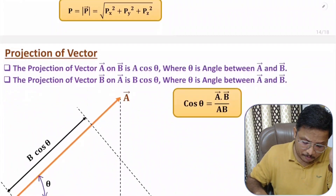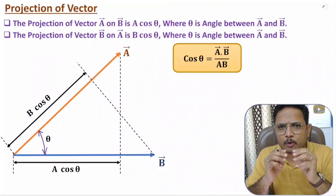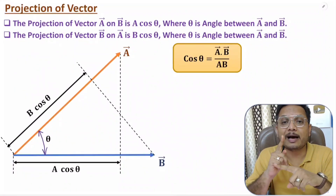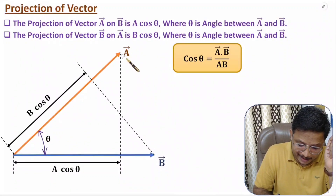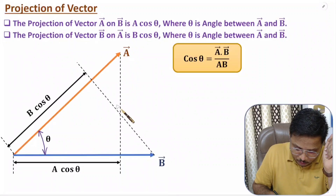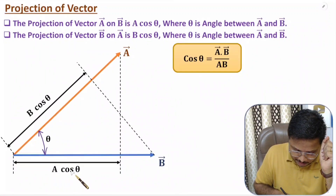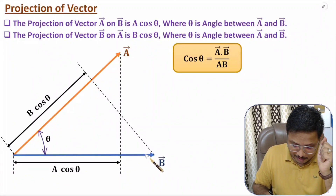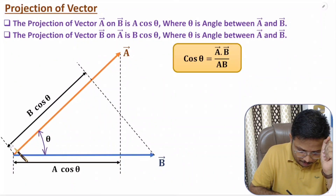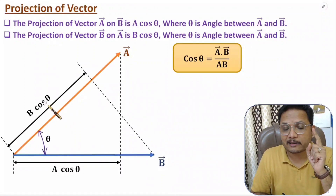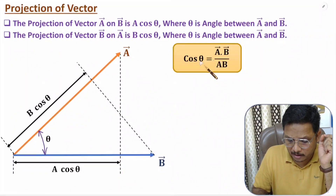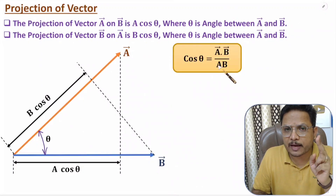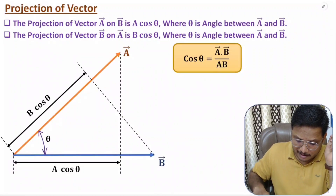Now I'll explain projection of a vector. Projection of a vector means how much magnitude of one vector is aligned onto another vector. If we have vector A and vector B, the projection of A on B is A cosθ, where θ is the angle between A and B. The projection of B on A is B cosθ. To identify θ, we use dot multiplication: cosθ = A·B divided by the magnitude of A times the magnitude of B.